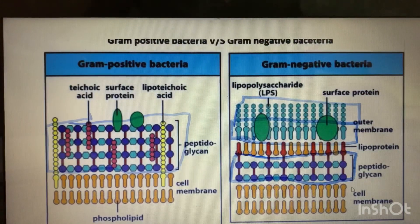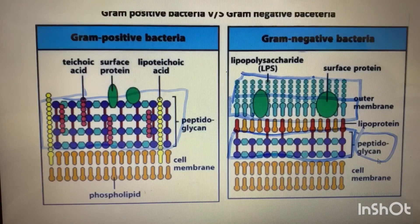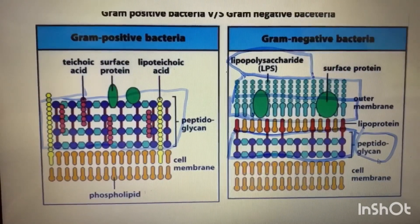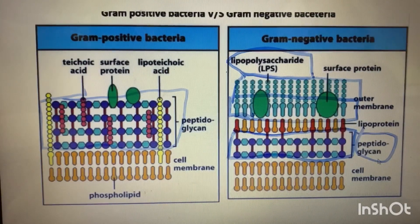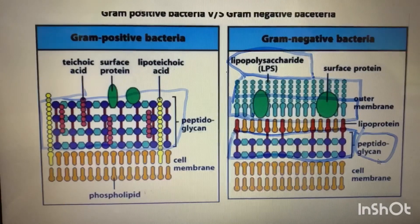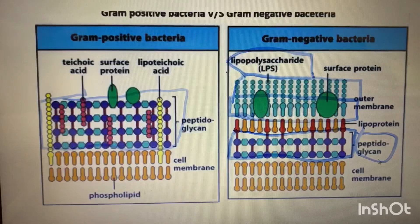The outer membrane of gram-negative bacteria is made up of lipids and contains endotoxin, that is lipopolysaccharide (LPS). Gram-negative bacteria loses the stain during the staining process because it has a thin peptidoglycan layer.